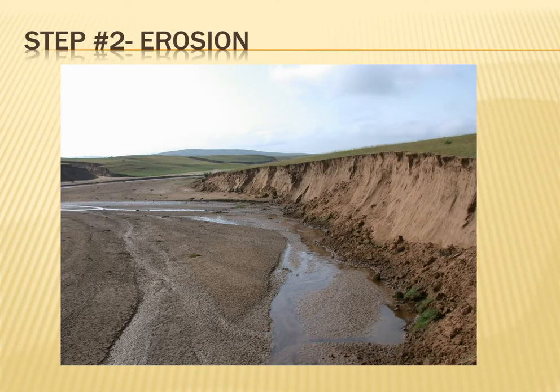Step number two: erosion removes the broken rocks or sediment from its location. This is what actually picks up those broken pieces. A lot of times this is due to water, but there are other processes that happen too. You can see in the image here this river is eroding along the bank and picking up that sediment.